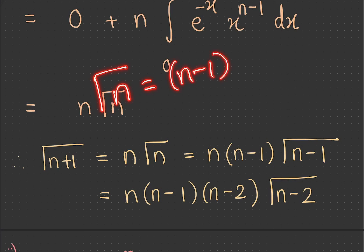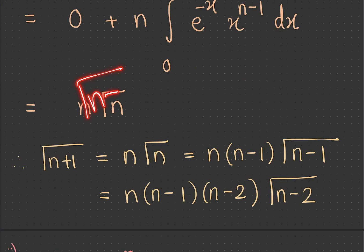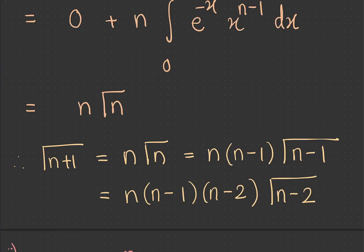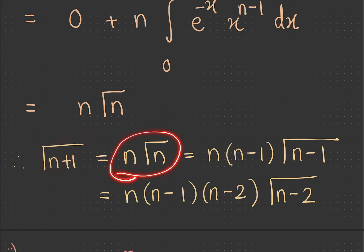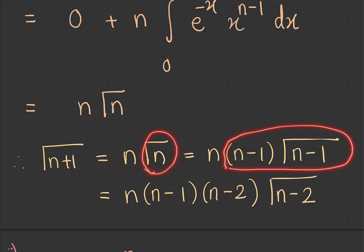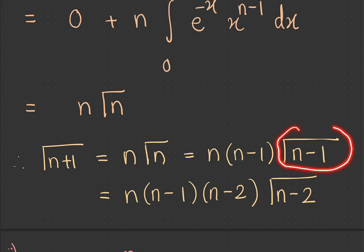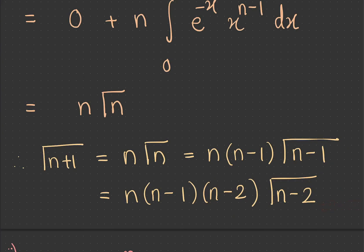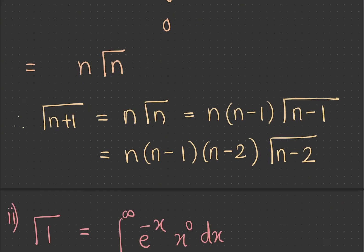Using this recurrence, gamma n equals n minus 1 into gamma of n minus 1, and gamma of n minus 1 equals n minus 2 into gamma of n minus 2, and so on. So gamma of n plus 1 equals n into n minus 1 into n minus 2 and so on.